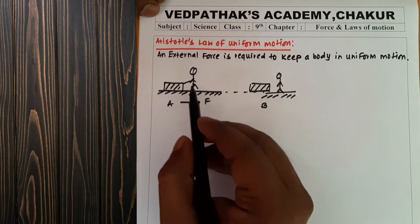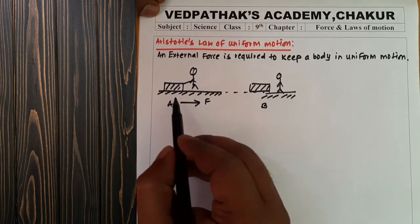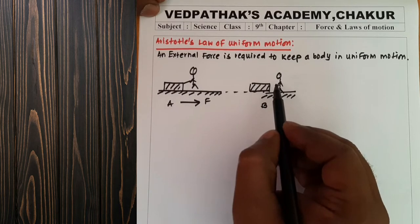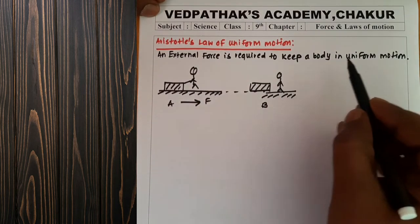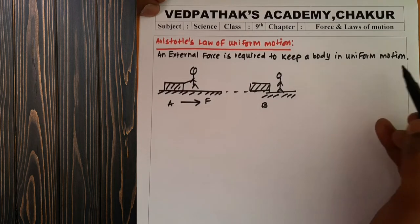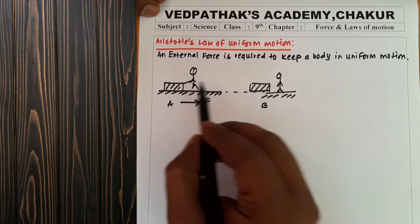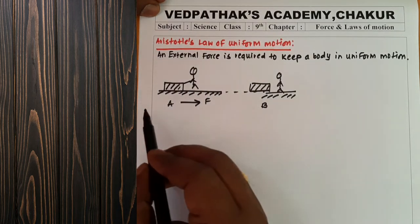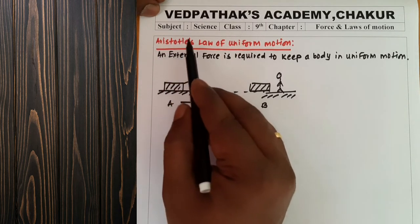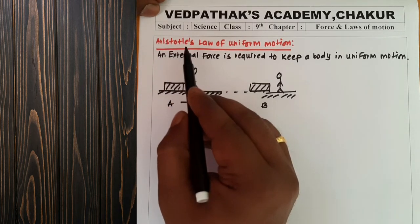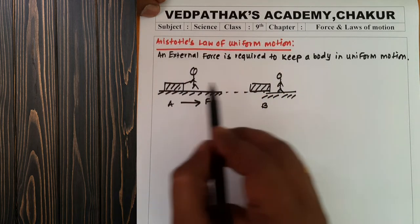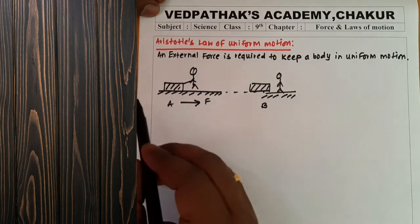Aristotle's observation is that the body is moving — in the sense of uniform motion, it is at constant velocity. So what do you require? You require an external force. This was the law given by the scientist Aristotle: for all uniform motion, an external force is required. This was the observation by Aristotle.